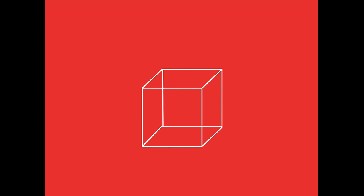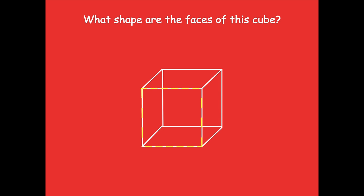A square can also be used to build a solid shape that has equal sides. Here's a cube. What shape are the faces of this cube? Faces are kind of like the sides of our cube. I just outlined one of the faces in yellow — what shape is that? Yeah, it's a square. So the faces of our cube are all squares.